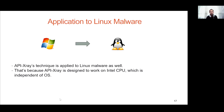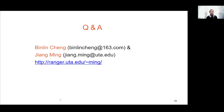Another interesting question is whether API X-ray can be applied to Linux malware. At present, Linux packers do not apply any API obfuscation scheme. In the future, if Linux packers apply API obfuscation to hide their API calls, API X-ray's techniques can be applied to Linux malware as well, because API X-ray is designed to work on Intel CPU, which is independent of the OS. Thanks for your time.